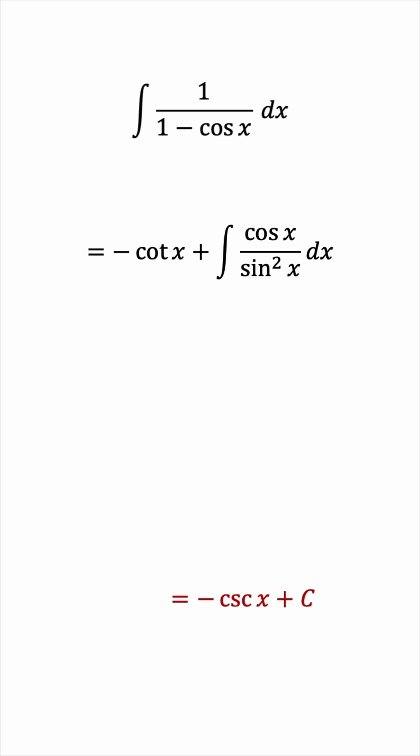So, that's it. The integral of 1 over 1 minus cosine x is negative cotangent x minus cosecant x plus a constant of integration c.